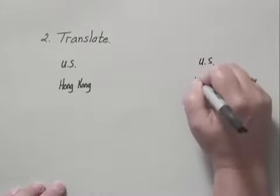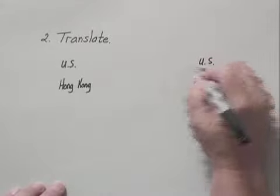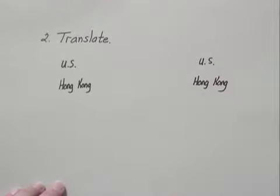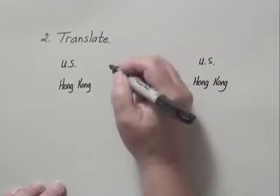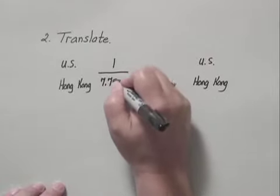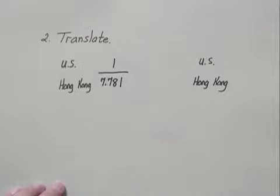I'm going to write that to remind me to get the U.S. in the numerator in both ratios and Hong Kong in the denominator. Again, we know the ratio 1 U.S. dollar to 7.781 Hong Kong dollars. That's the exchange rate.